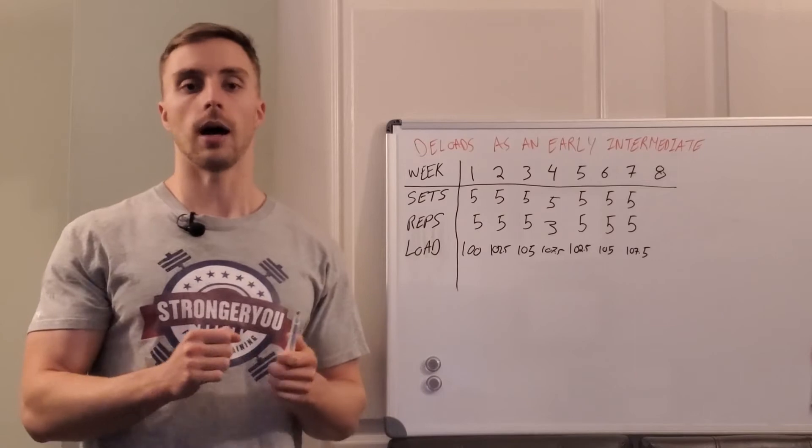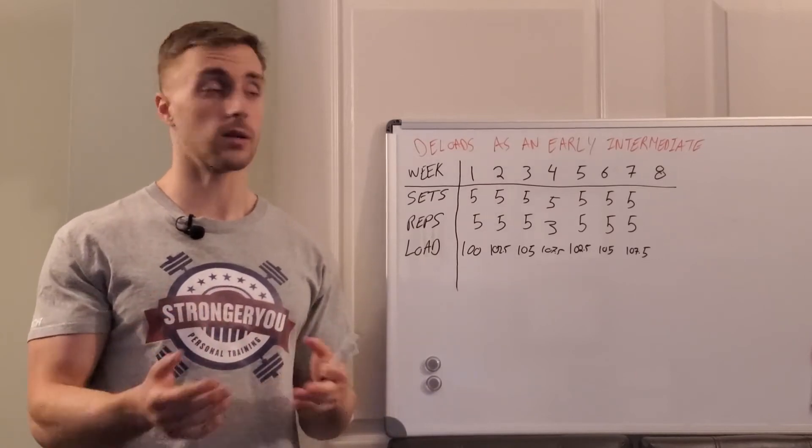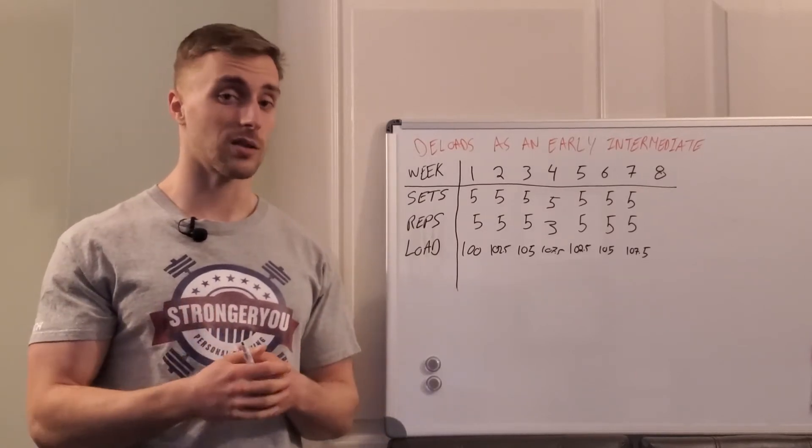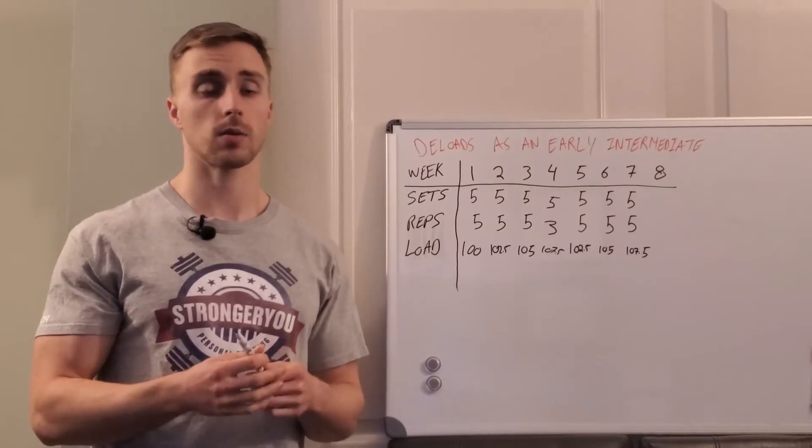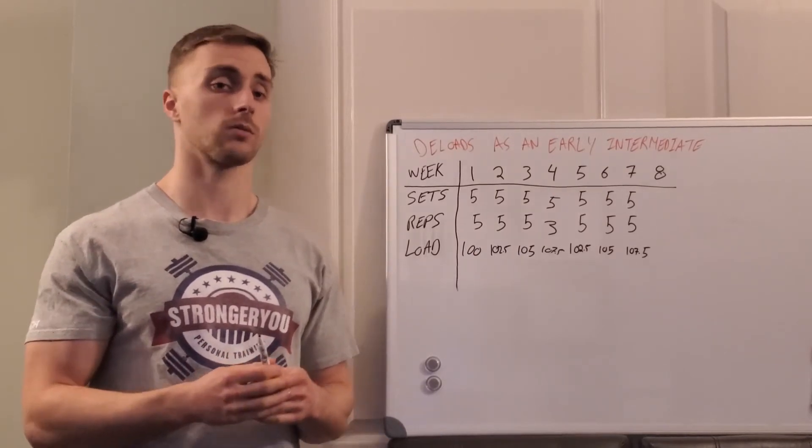So if you find you do a little bit better with say five doubles instead and you're working at closer to a thousand pounds or 1,100 pounds of volume, great. It's just going to take some experimentation to find what's going to work best for you.